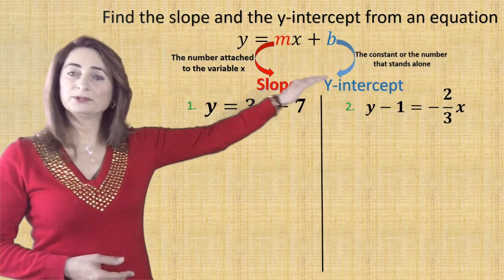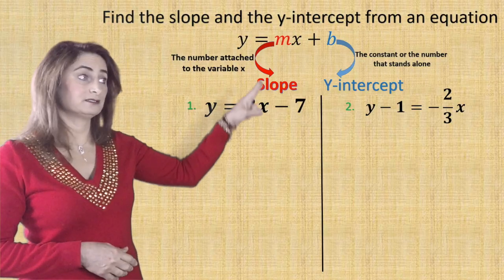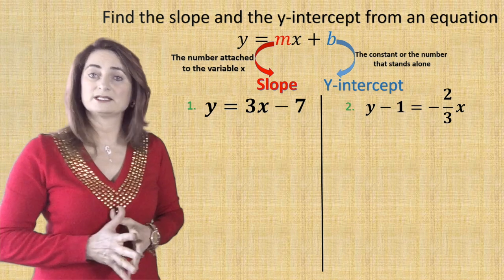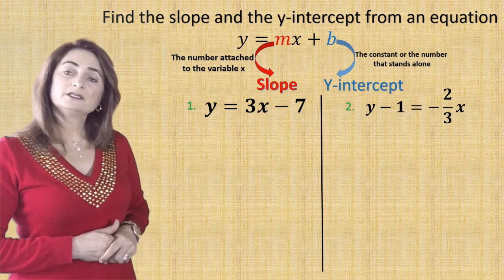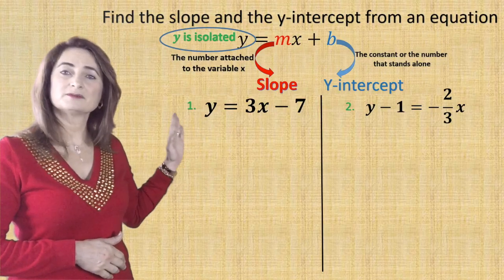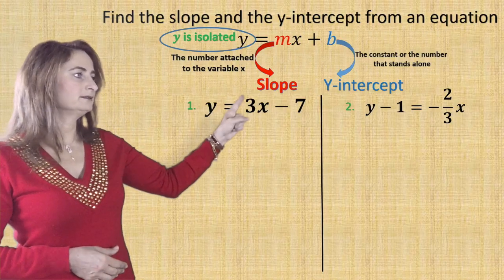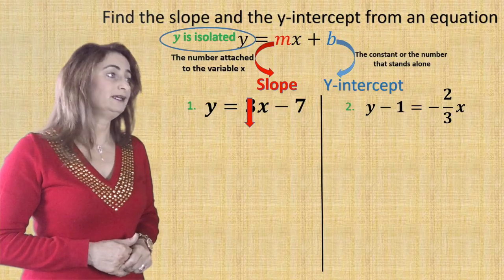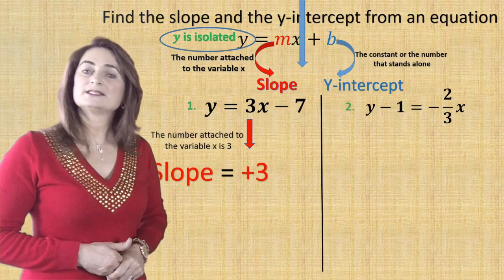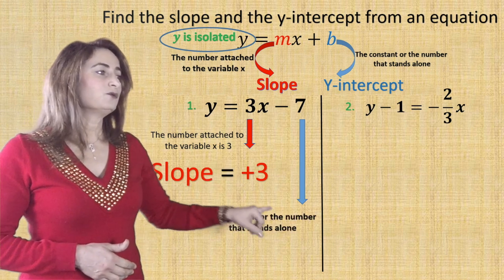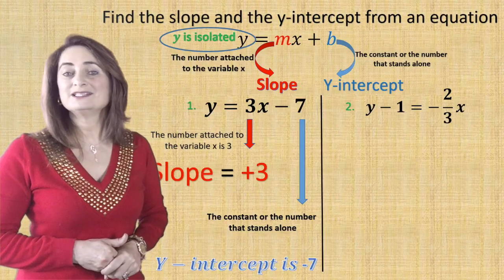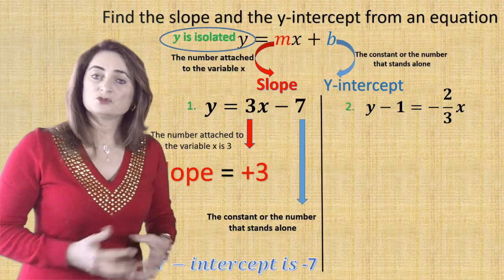Let's practice finding the y-intercept and slope from equations using y equals mx plus b. For example one, check: is y isolated? Yes. The number attached to x is positive three, so the slope equals three. The number that stands alone is negative seven, so the y-intercept equals negative seven — take the sign with the number.